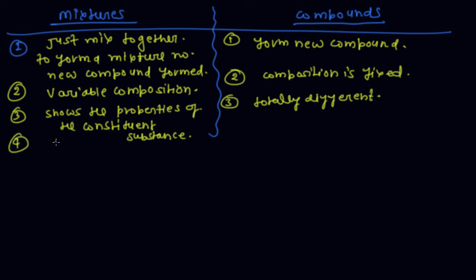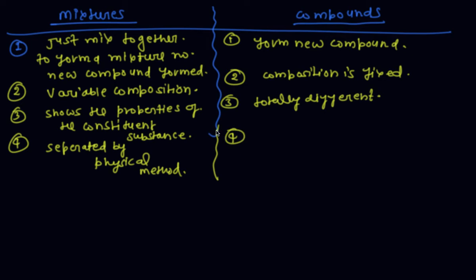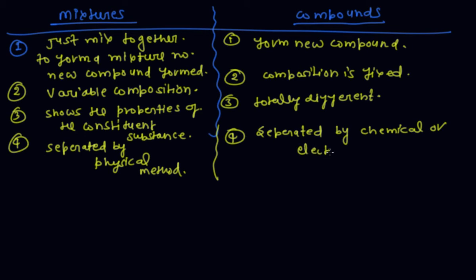The fourth difference is that in a mixture, components can be separated by physical methods, whereas in a compound they can only be separated by chemical or electrochemical reactions.